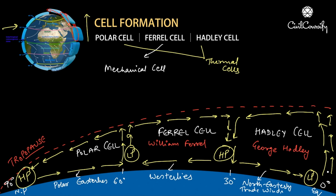One important point about the Hadley cell: as the ITCZ shifts, the low pressure that forms there — we say equator for easy understanding, but it actually forms at the ITCZ — shifts throughout the year. Therefore, the Hadley cell also shifts a little, sometimes slightly north into the northern hemisphere and sometimes slightly toward the southern hemisphere.